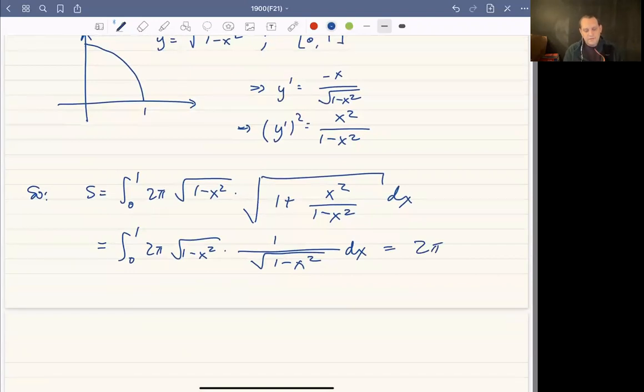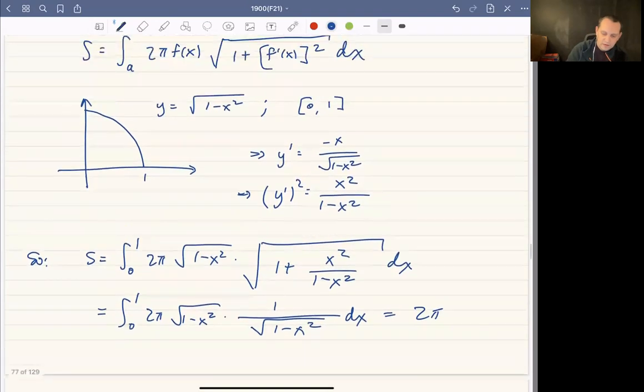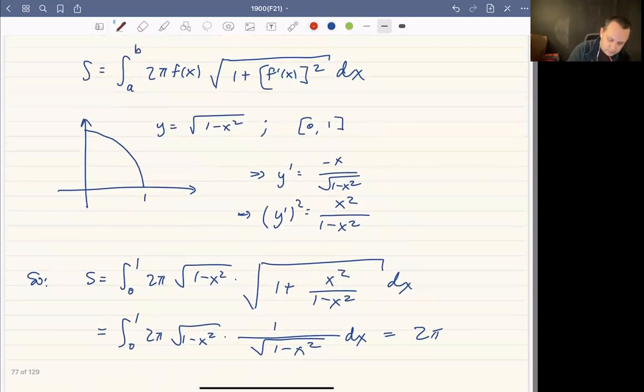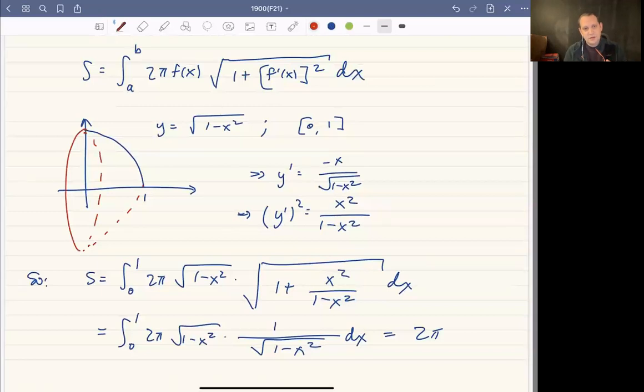Okay, and so it turns out that if you take the sphere of radius one, and then rotate that about the x axis, you have half of a sphere, or sometimes called a sphere cap. And that sphere cap is going to have area 2π.